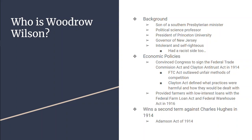As far as his first term goes as president, he convinced Congress to sign the Federal Trade Commission Act, which creates the FTC. The Federal Trade Commission is an agency that can investigate unfair methods of business, issue cease and desist orders, and help prosecute antitrust legal cases.